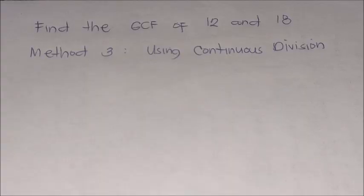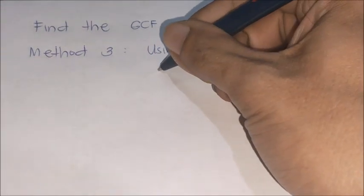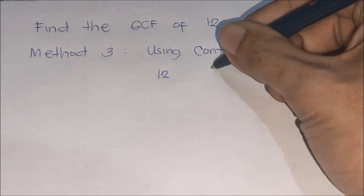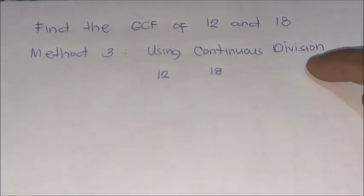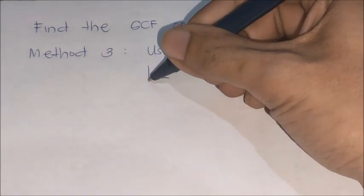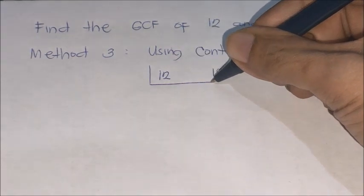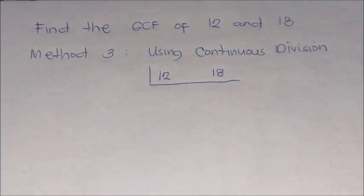Find the GCF of 12 and 18. Method 3: Using Continuous Division. We write 12 and 18 again. Since we're using continuous division, we put a division sign below the 12 and 18.